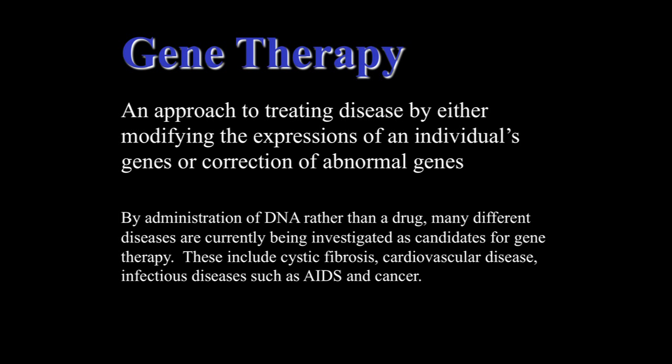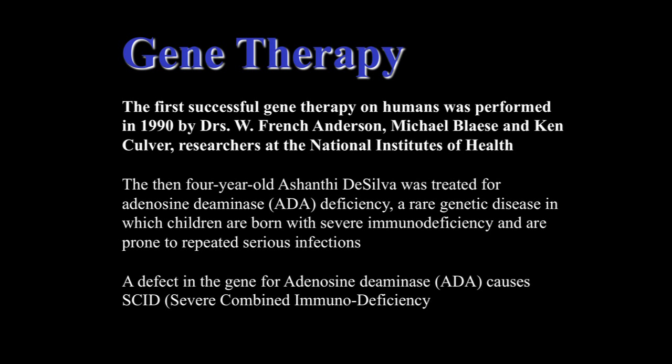By administration of DNA rather than a drug, coincident with cellular pharmaceuticals, many different diseases could be currently treated or investigated as candidates for gene therapy. The notion is rather simple to explain: you have a mutant gene which causes a degenerative disorder, and this could be replaced or augmented. The first successful gene therapy on humans was accomplished in 1990 by Drs. French Anderson, Michael Blaese, and Ken Culver, researchers working for the NIH.